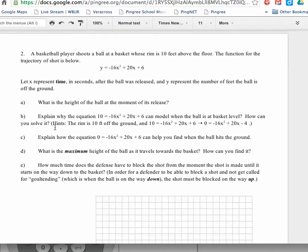But then it says in part b, explain why this equation can model when the ball is at basket level. Well, the basket is ten feet off the ground. And how can we solve this equation? So I give you a hint that the rim is ten feet off the ground. So you just simply substitute that ten, that value, in for the height since that's what our equation does.